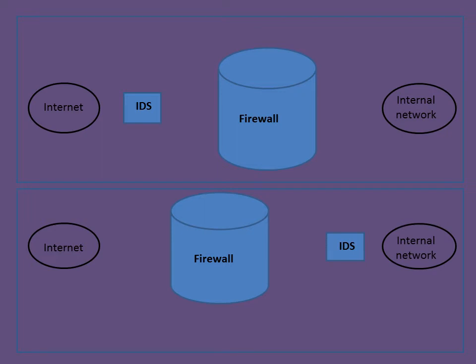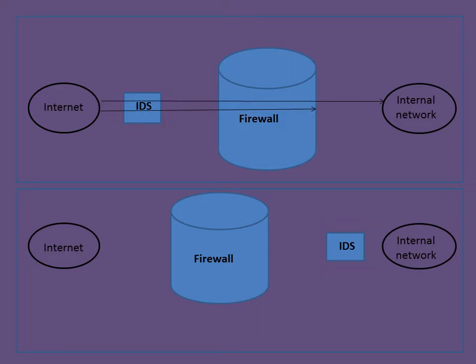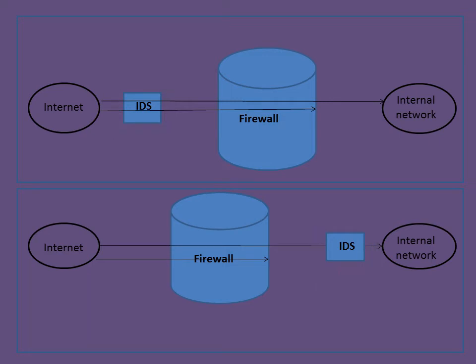Network-based IDS can be placed between the internet and firewall, or between the firewall and the internal network. If placed between internet and firewall, IDS will be able to monitor and record all intrusion activity. But if placed between firewall and internal network, any activity blocked or prevented by the firewall will not pass through IDS and such attacks will not be recorded or monitored.